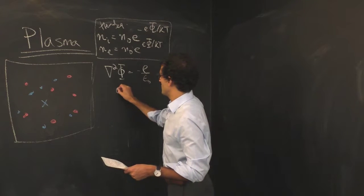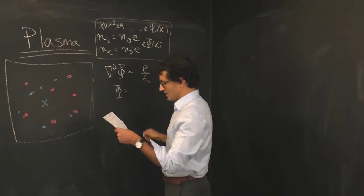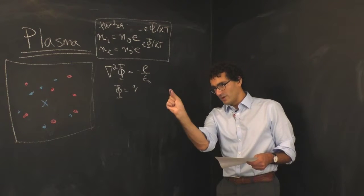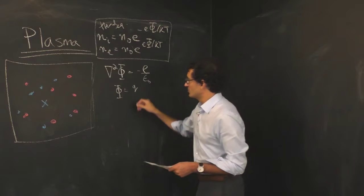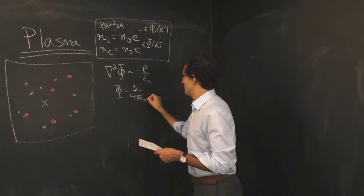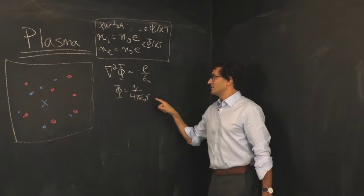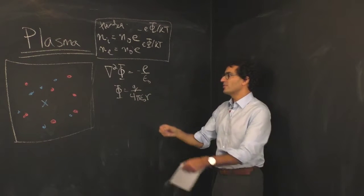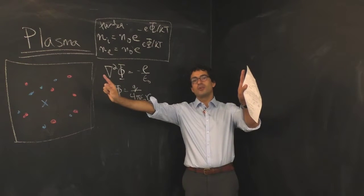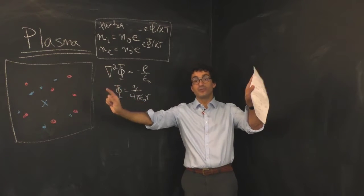If we assume we're dealing with a point charge so all the charge is focused at one tiny spot with total charge Q, then the potential produced by that charge Q at the origin scales as one over R. The further you are from that point charge, the lower the field, and that scaling is one over R.